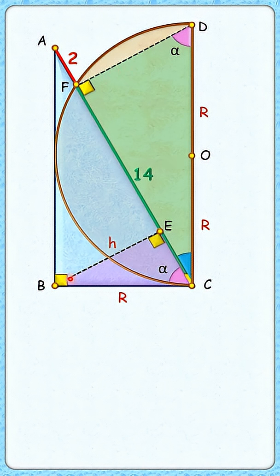And thus ratio of corresponding sides will be equal. Putting the values here we'll get h upon R is 14 upon 2R.